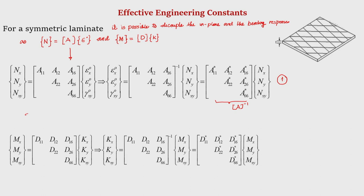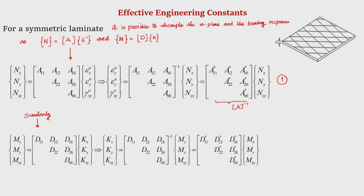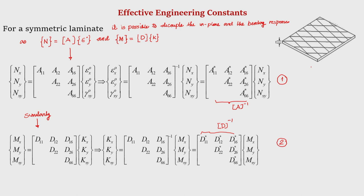Similarly, we could write the moment-curvature relationship: Mx, My, Mxy are related to κx, κy, κxy by the D matrix. Inverting the D matrix, we can write the curvatures in terms of the moment resultants, where D11*, D12* are elements of the D-inverse matrix. We could write the in-plane and moment-curvature relationships independently for a symmetric laminate, as we discussed in the last class. A symmetric laminate has a stacking sequence with symmetry in geometry and material properties with reference to the mid-surface.